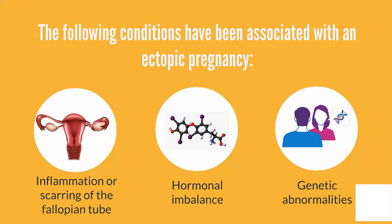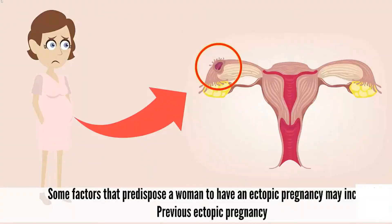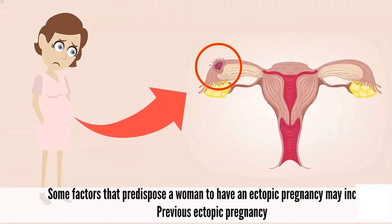The following conditions have been associated with an ectopic pregnancy: inflammation or scarring of the fallopian tube, hormonal imbalance, genetic abnormalities, and medical conditions that cause the fallopian tube to be misshapen. Some factors that predispose a woman to have an ectopic pregnancy include previous ectopic pregnancy.